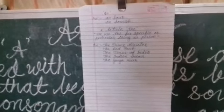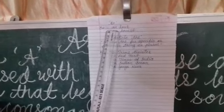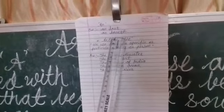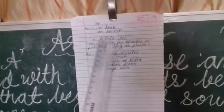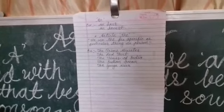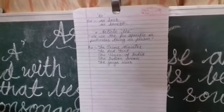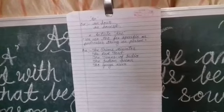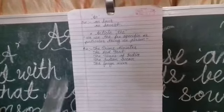Remember, we use AN before the letter H when H is silent. For example: an hour, an honest. In this example, H is silent. The pronunciation of these words are 'honest' and 'our'. So we use the article AN.